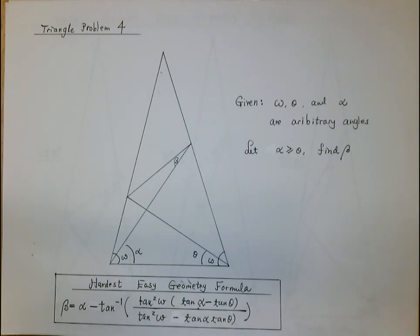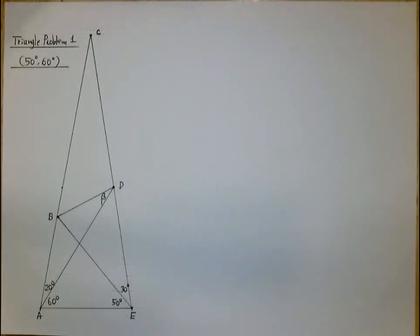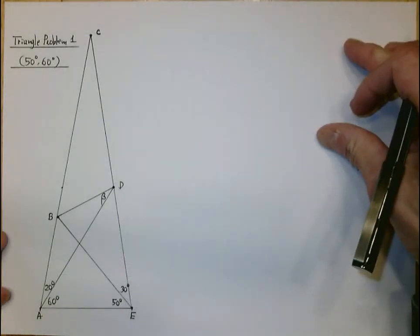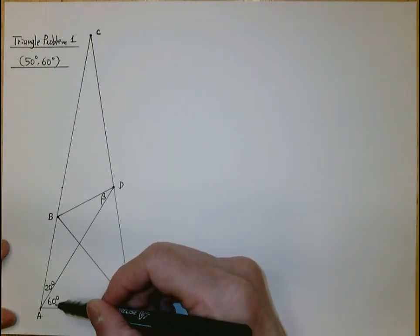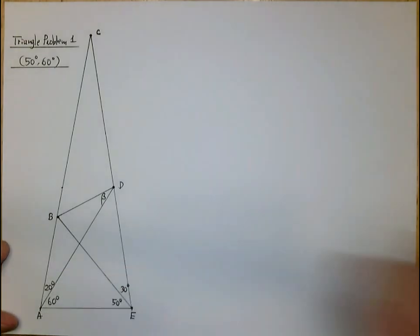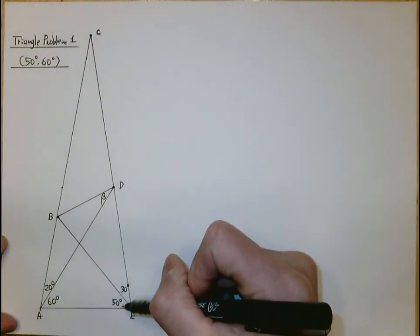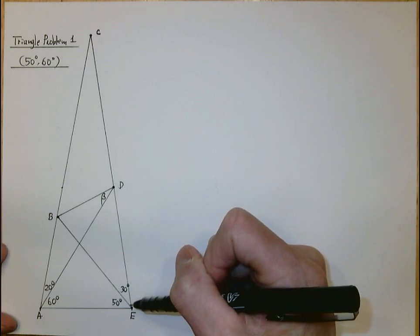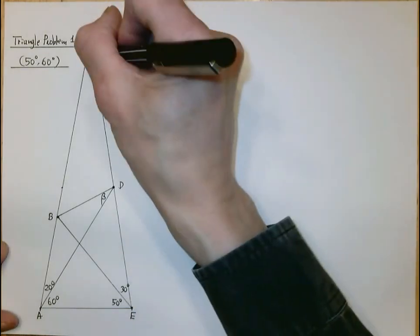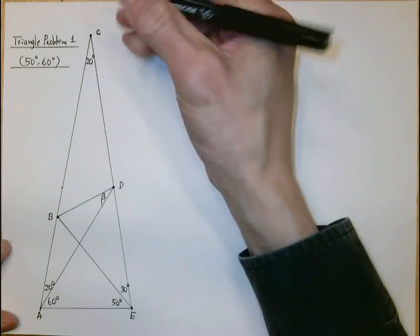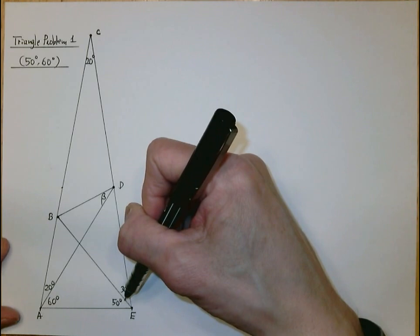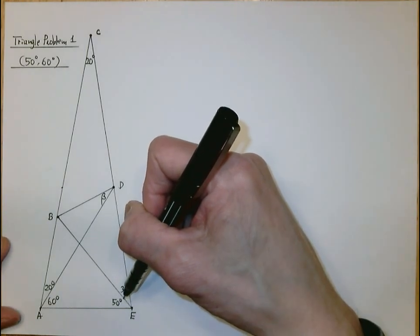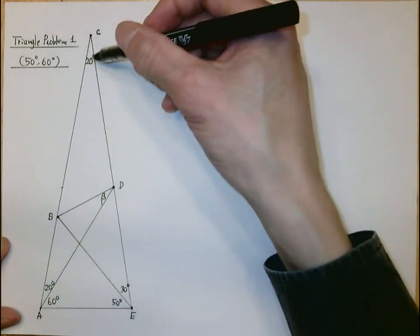Now let's begin problem number one. This is triangle problem number one. We have 20 degrees and 60 degrees, which makes angle A equal to 80 degrees. And we have 30 degrees and 50 degrees, which makes angle E equal to 80 degrees. That means angle C is 20 degrees, because the sum of the three angles of a triangle is 180 degrees: 80, 80, and 20 degrees.